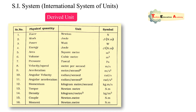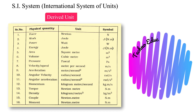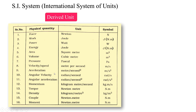Velocity can be defined as the rate of change of an object's position with respect to a frame of reference and time — its unit is meter per second. Acceleration is the rate of change of velocity, and its unit is meter per second square. Angular velocity has the unit radian per second, and angular acceleration has the unit radian per second square.